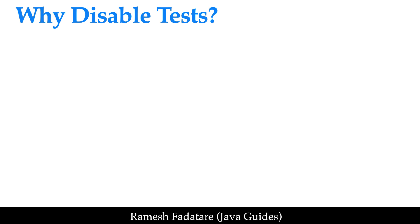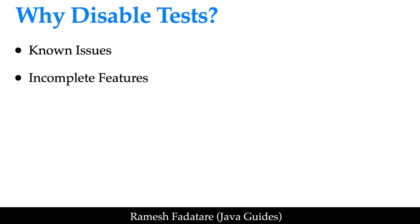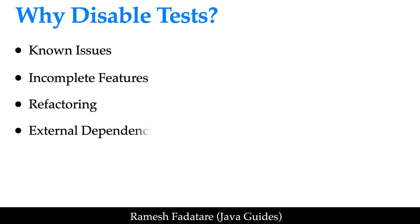There are several reasons why you might want to disable test cases. Known issues: if a test is failing due to a known bug or issue that you are working on, you might disable the test until the issue is resolved. Incomplete features: if a test is for a feature not yet fully implemented, you might disable it until the feature is complete. Refactoring: when refactoring code, you might temporarily disable affected tests. External dependencies: if a test relies on an external service that is currently unavailable, you might disable it until the dependency is back online.